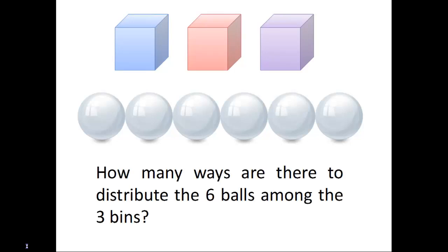Now, let's take a look at balls and dividers. Let's suppose we have 6 identical balls and we have 3 bins which are not identical. How many ways can we distribute the 6 balls among 3 bins? For example, we can assign 2 balls to the first bin, 3 balls to the second bin, and 1 ball to the final bin. Another possibility is assigning 3 balls to the third and second bins, and leaving the first bin completely empty.